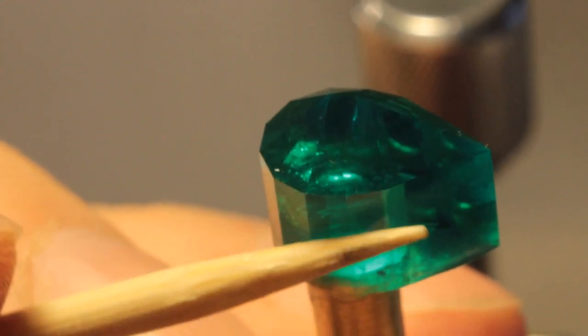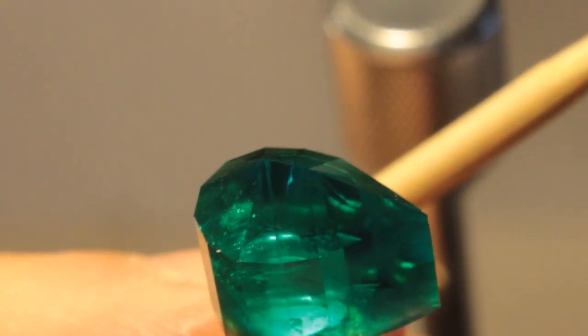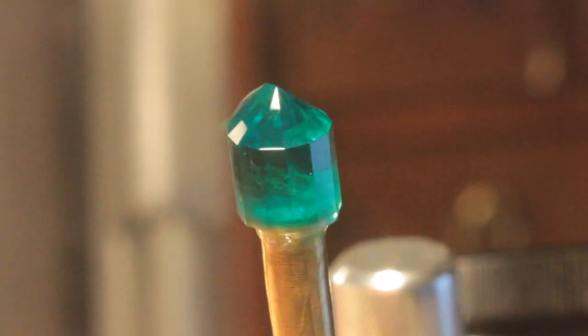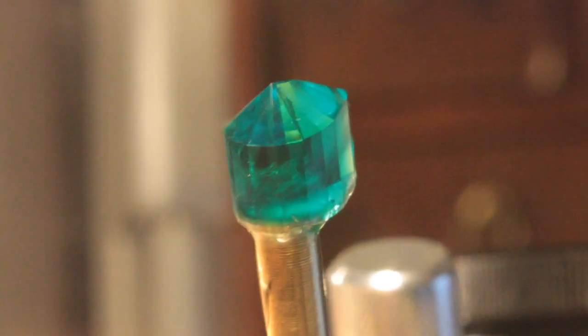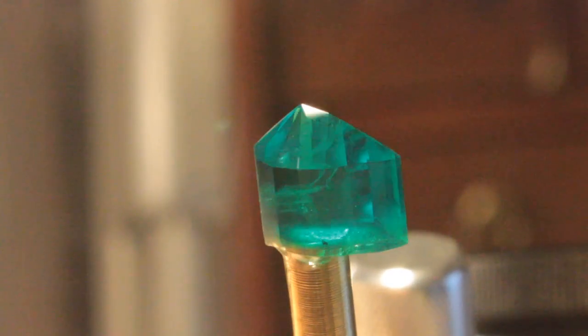So now I'll continue to polish the rest of the pavilion of our emerald. Okay, the pavilion polished right up with the cream weight lap so now I'll transfer our second earring and cut the upper half of this stone.